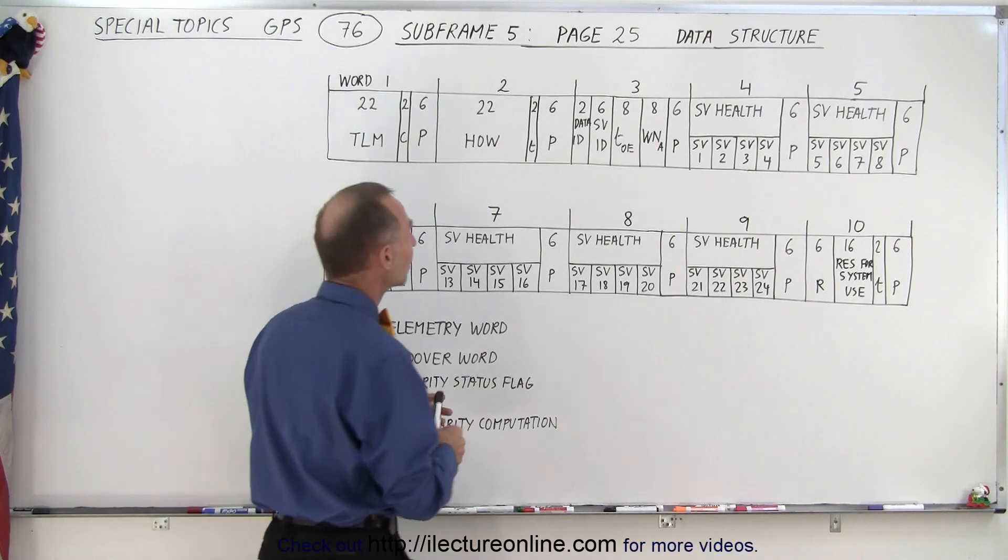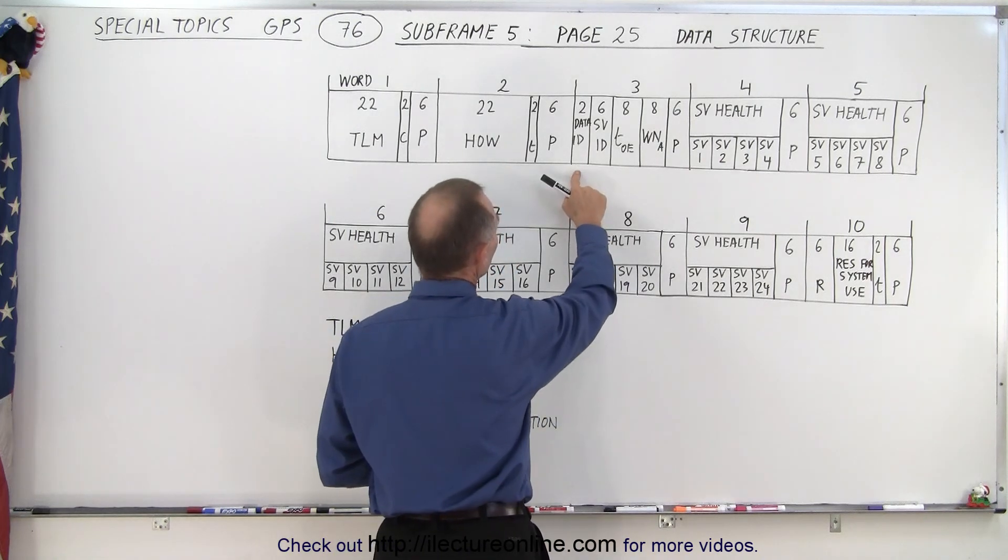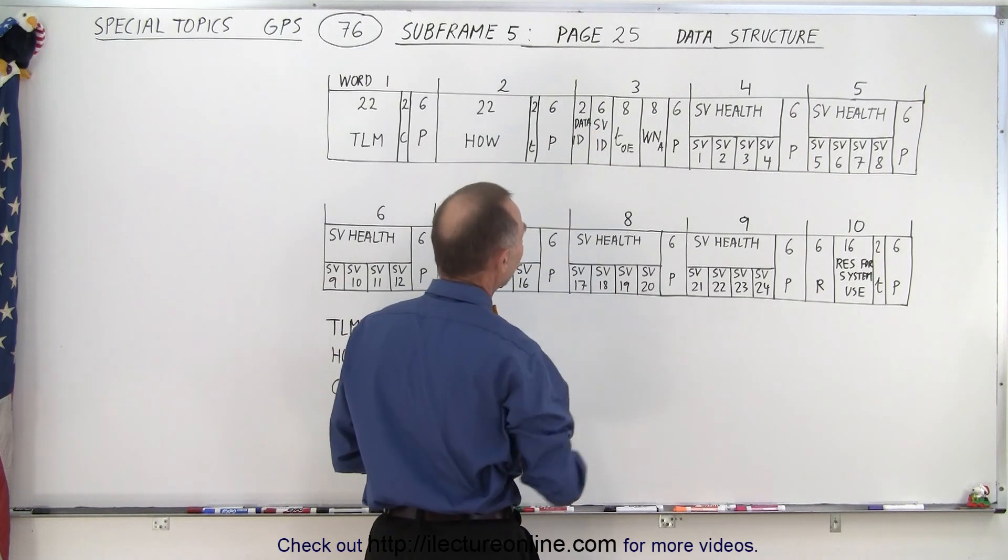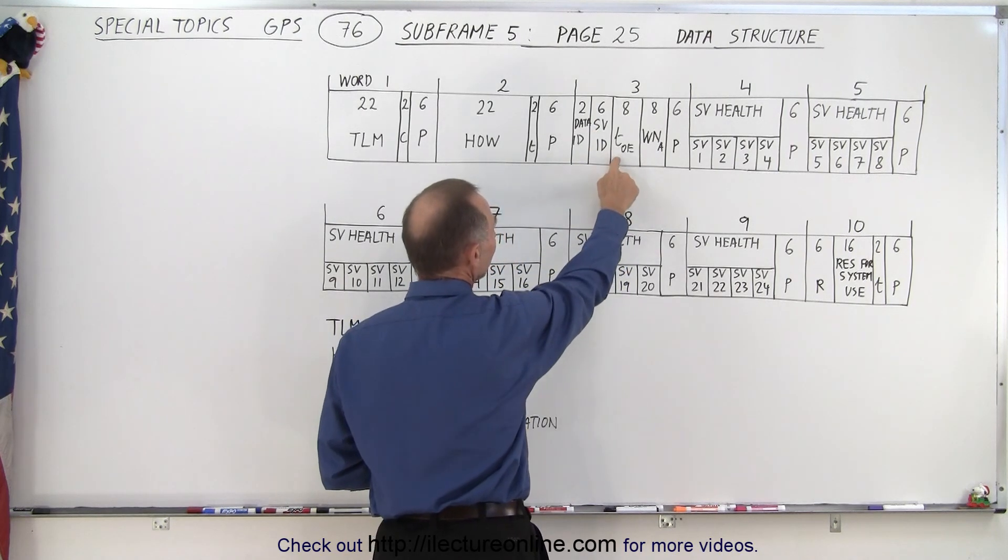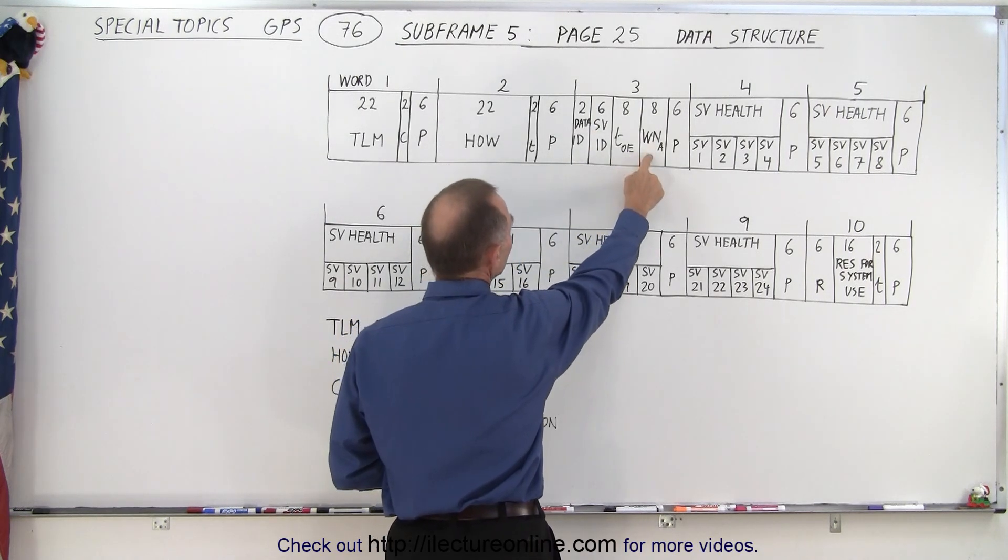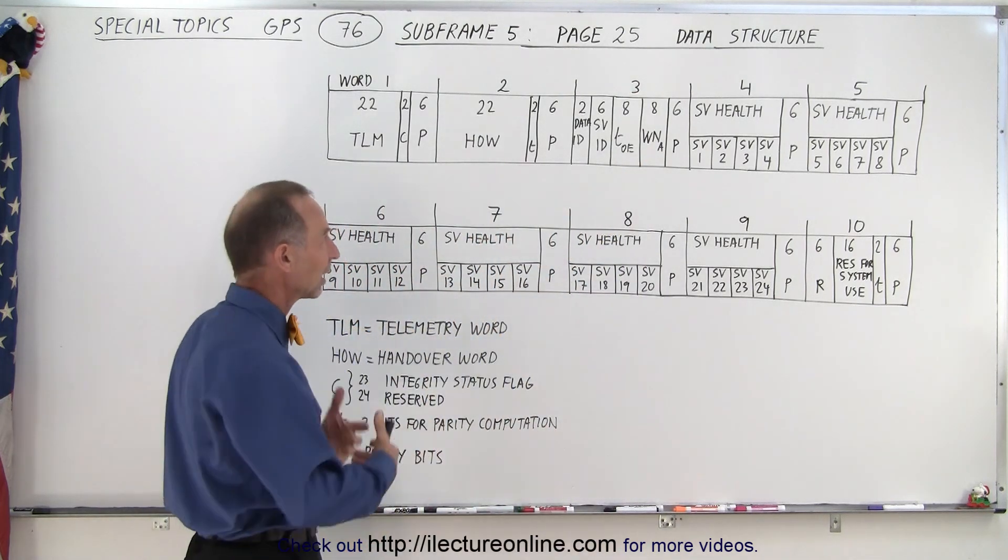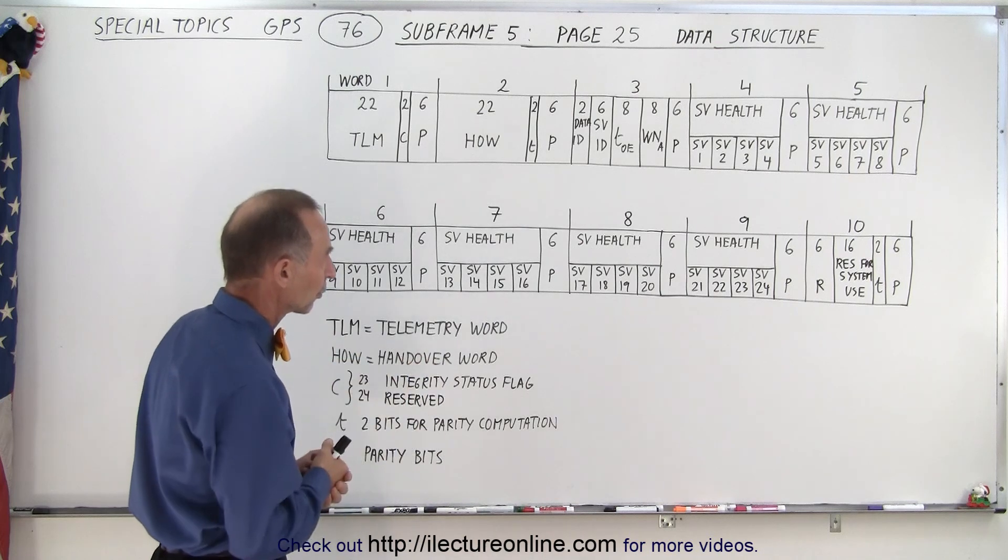You can then see here that in word 3, we have two bits associated with the data ID and six bits with the SV ID. We also have eight bits with the time of the ephemeris, and then we have the week number associated with the almanac. This is information that is then contained within word 3.